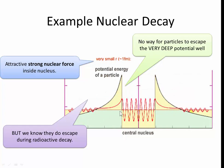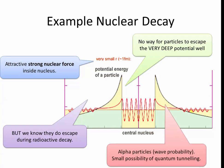If we have a wave, a probability wave which can extend across the barrier, there's a very small chance that an alpha particle can exist outside of the nucleus. And very rarely it is able to escape and will leave. And this is alpha decay. The alpha particles, which are basically a wave probability, have a small possibility of quantum tunneling. So they're able to escape, and this is what causes alpha decay.